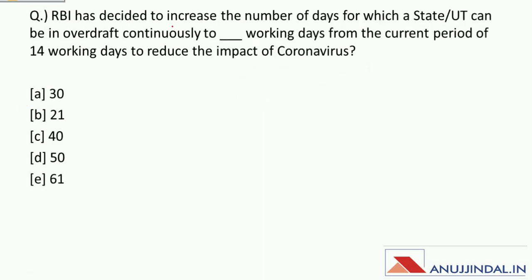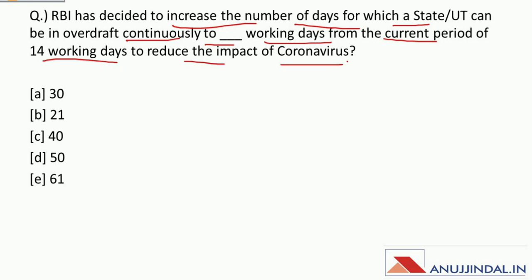RBI has decided to increase the number of days for which a state or UT can be in overdraft continuously. To reduce the impact of coronavirus, RBI has decided to increase this period from the current 14 working days to 21 working days.